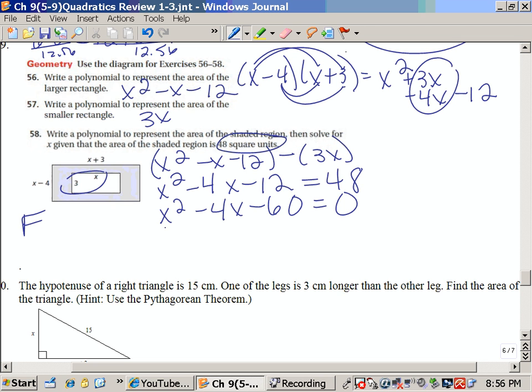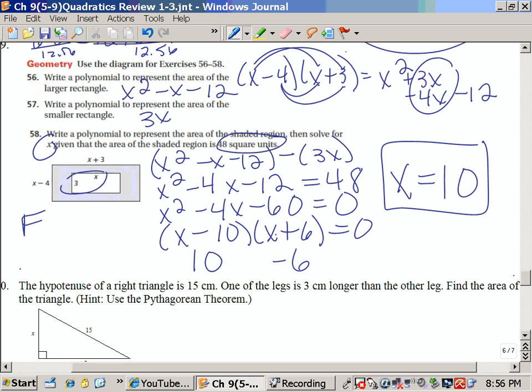So I just thought of it. It is x minus 10 and x plus 6 that multiplies to give me negative 60 and adds to give me negative 4. The x minus 10, what can you plug in for x to make it 0? That's a 10. And what could you plug in this x to make it 0? That would be 6. So we had to write a polynomial, then solve for x, and I have solved x is 10.